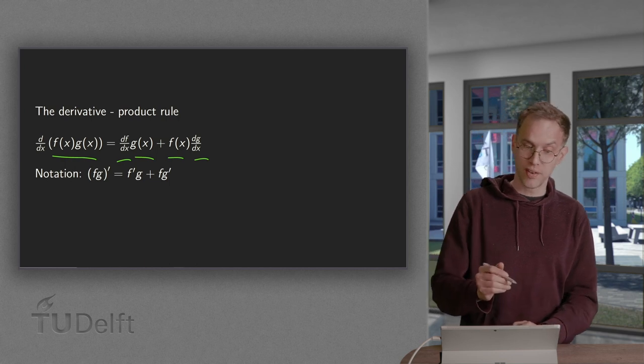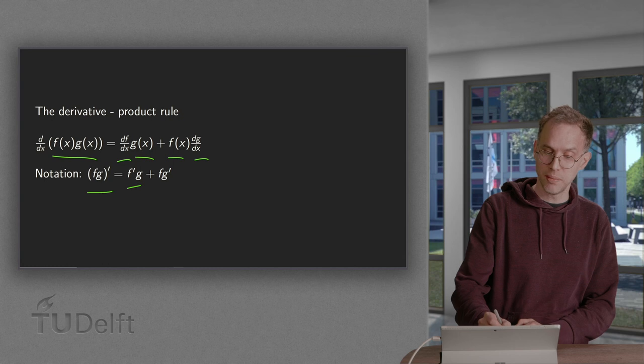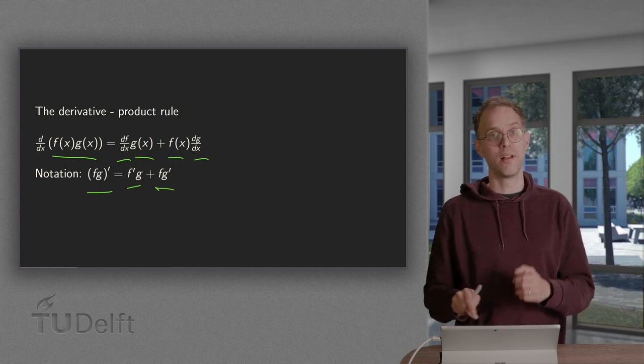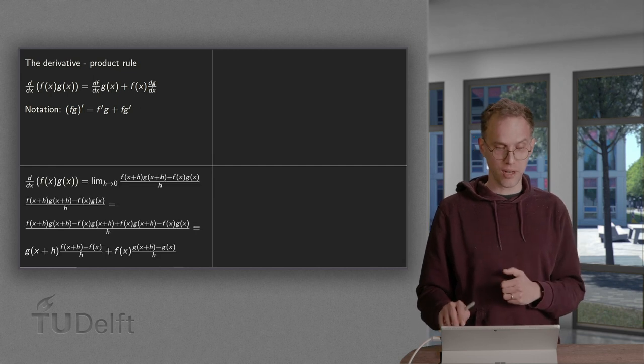Or you may be more familiar with this notation: f times g prime equals f prime times g plus f times g prime. So how do we prove this? And then we will see an example.